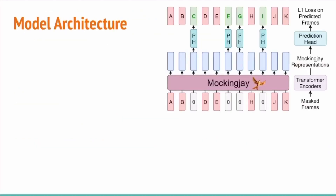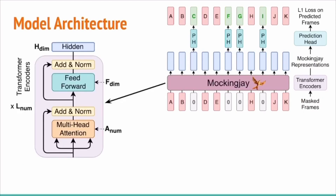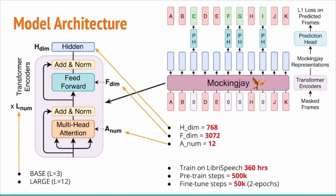I would like to go over some details about the model. We illustrate a conventional transformer encoder block, which consists of multi-head attention, feed-forward network, and residual connections. The hidden dimension is 768 with feed-forward dimension of 3072. We use 12 attention heads and pre-trained for 500,000 steps on the LibriSpeech 360-hour subset. When we fine-tune the Mockingjay model with downstream models, we fine-tune for 50,000 steps, which is approximately two epochs of training data. We train two models: the base model with three layers, and the large model with 12 layers.